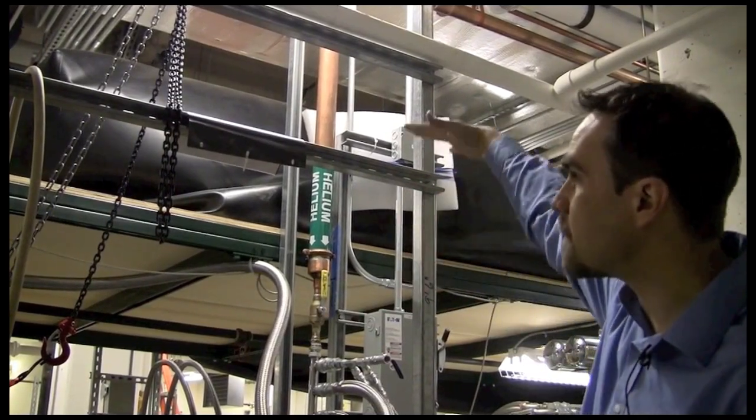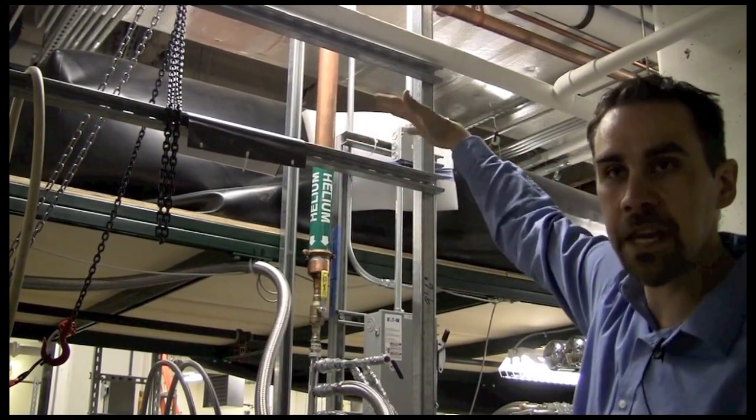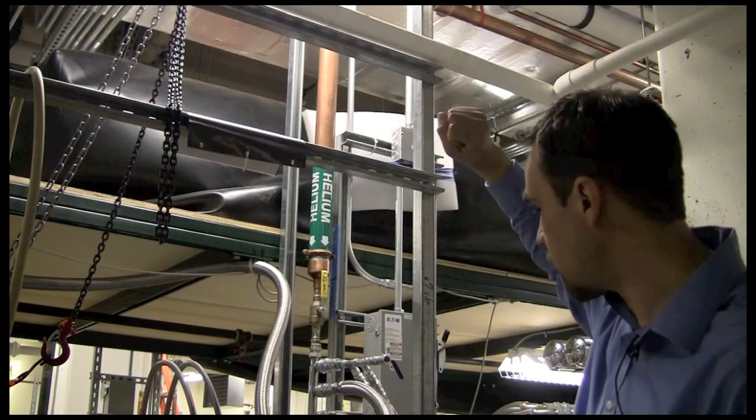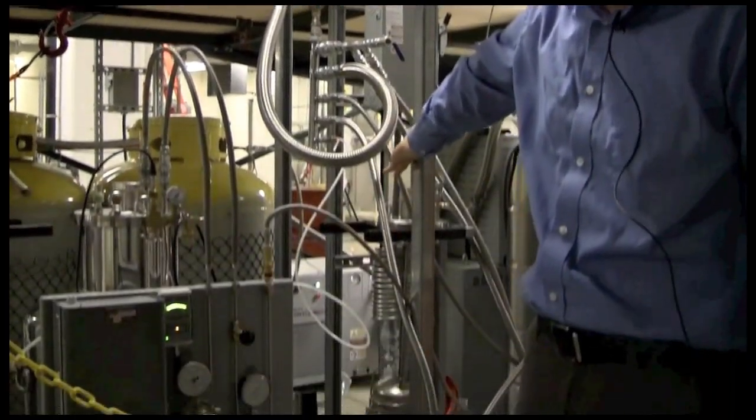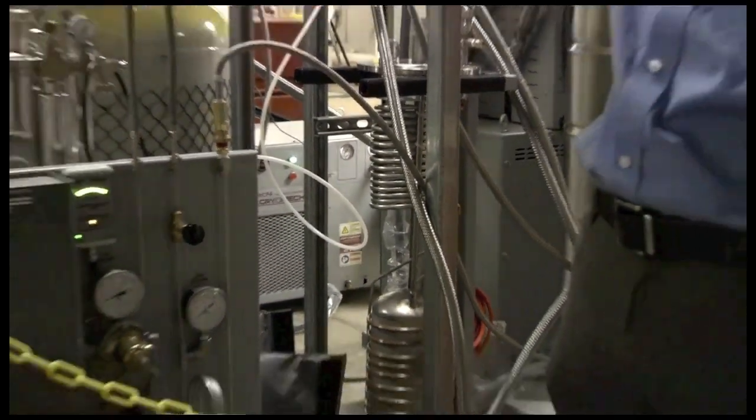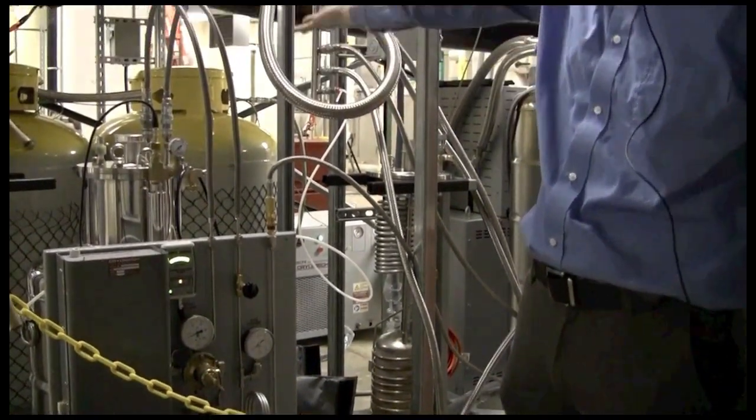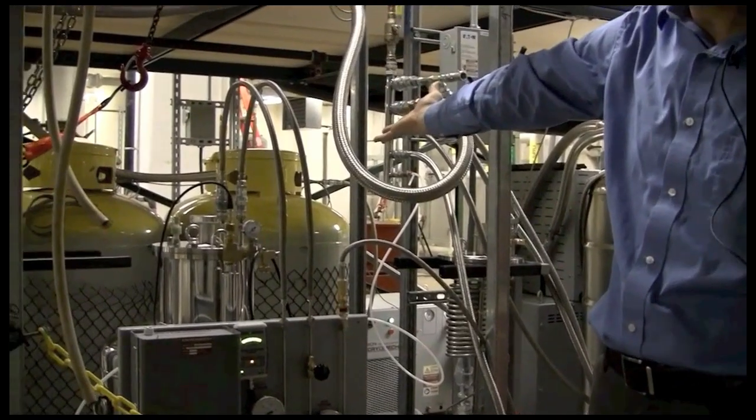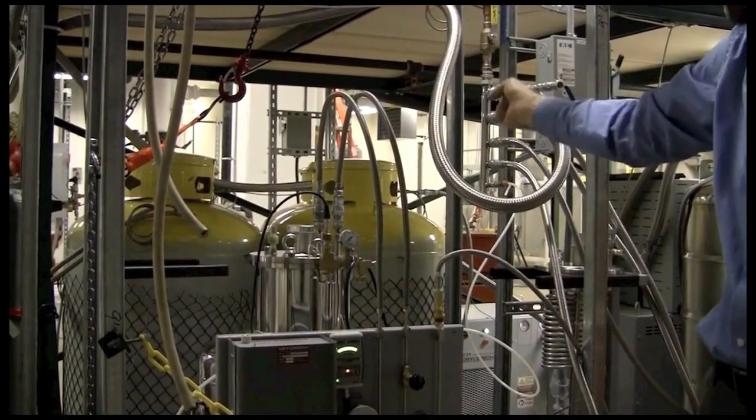When the bag fills up to a certain level, it trips a laser sensor and turns on the helium compressor, which is located down here. The helium compressor pumps the helium out of the bag and into these large yellow compressed gas storage cylinders.